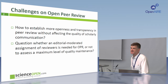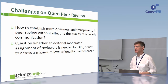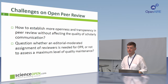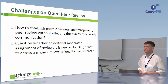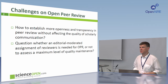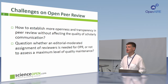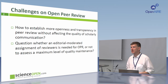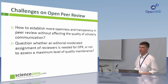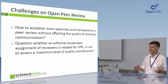The first question is how to establish more openness and transparency in peer review in general, without — and that's very important — affecting the quality of scholarly communication. We know there are a lot of differences between communities — humanities, social sciences, life sciences, medicine — in terms of peer reviewing. There are different ways to assess the quality of manuscripts and different ways to publish manuscripts or monographs in different areas.